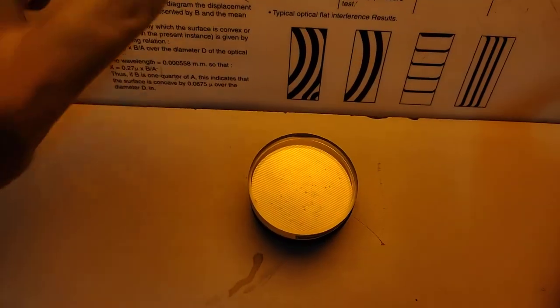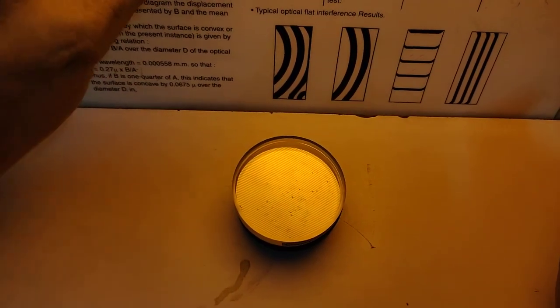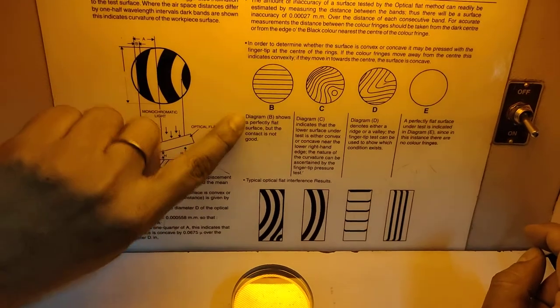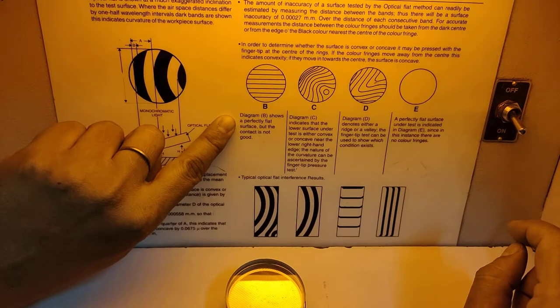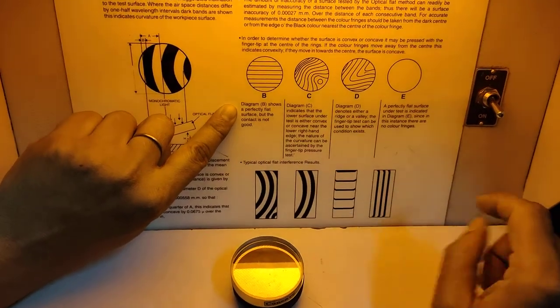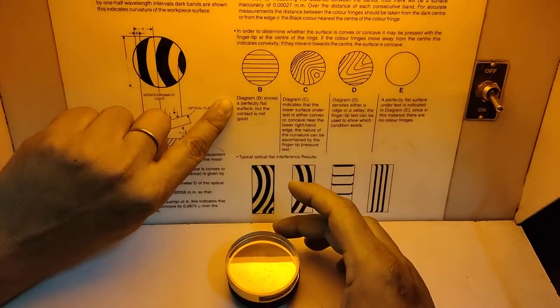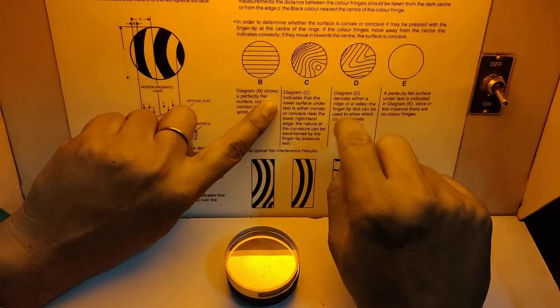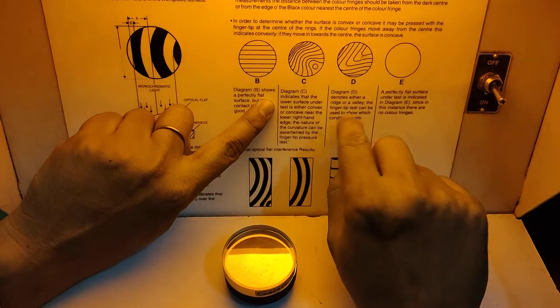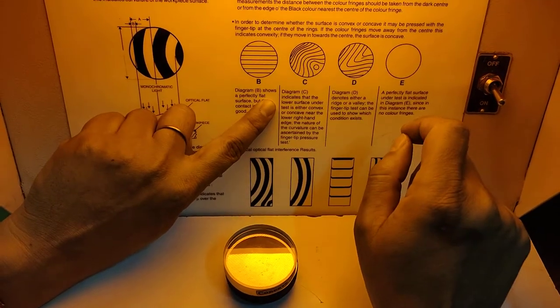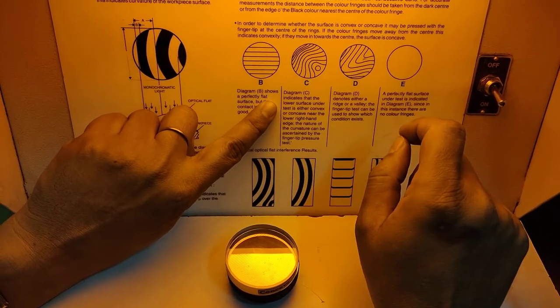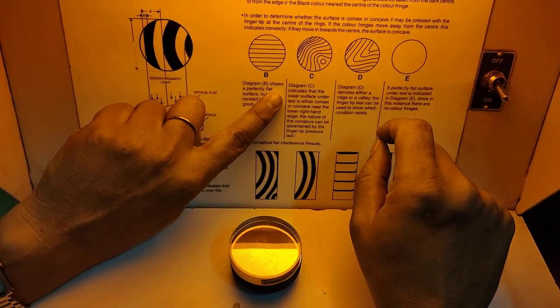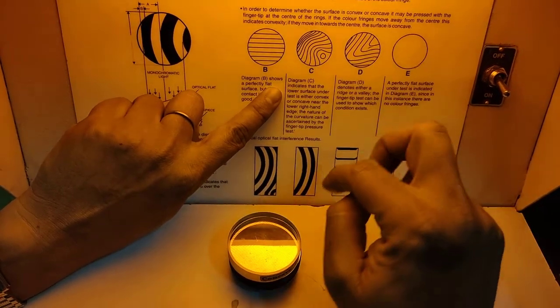There are different pictures. Diagram B shows perfectly flat surface but contact is not good. Diagram C indicates that the lower surface under test is either convex or concave near the lower right-hand edge. Nature of the curvature can be ascertained by the fingertip pressure test.